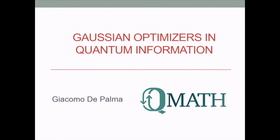Good morning to everybody and thanks for the opportunity of giving this talk. I will speak about the route that led to the proof of the property that Gaussian quantum states minimize the output entropy of Gaussian quantum channels for given input entropy. That's the title: Gaussian optimizers in quantum information.